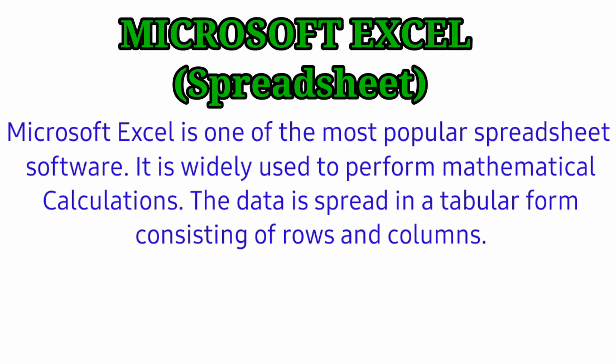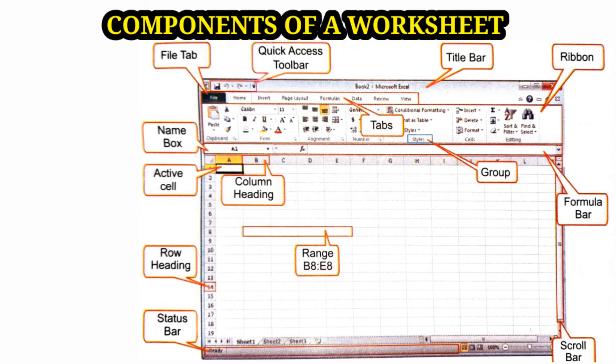The data is spread in a tabular form consisting of rows and columns. Components of a worksheet: Cell - a cell is an intersection of a column and a row in a worksheet.